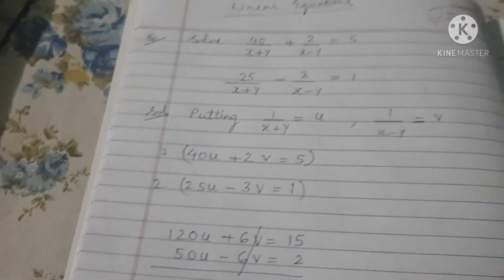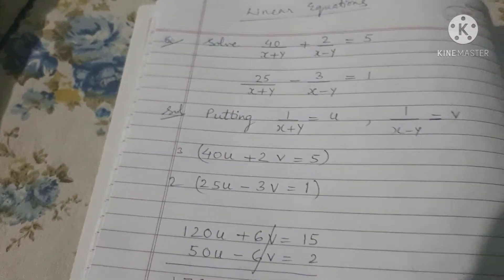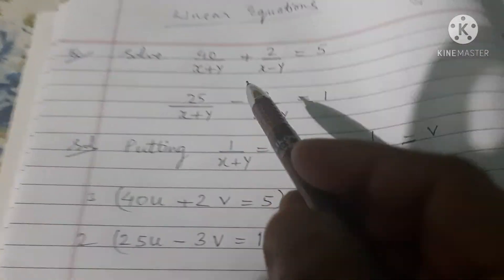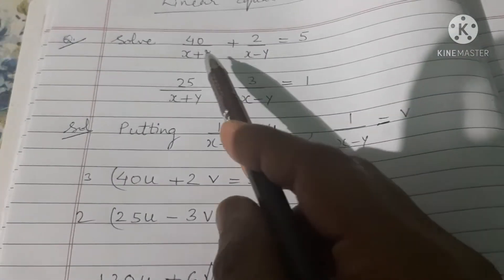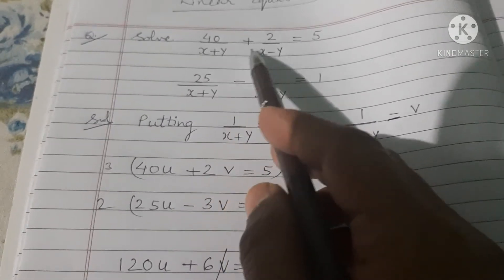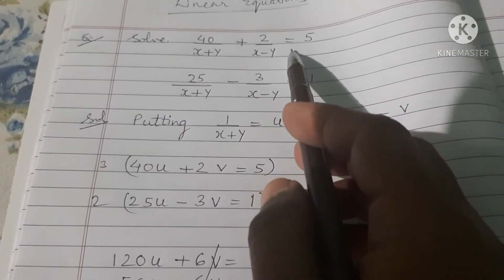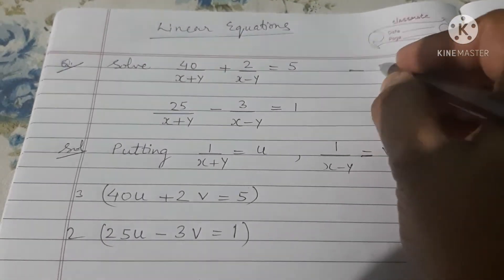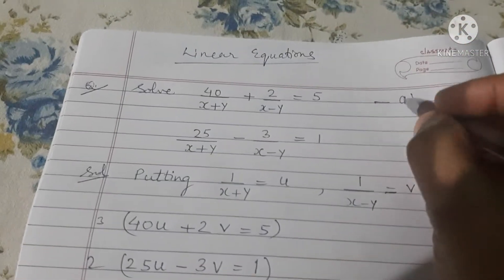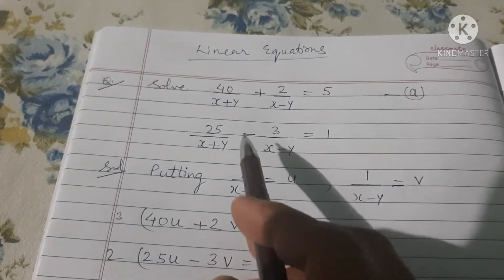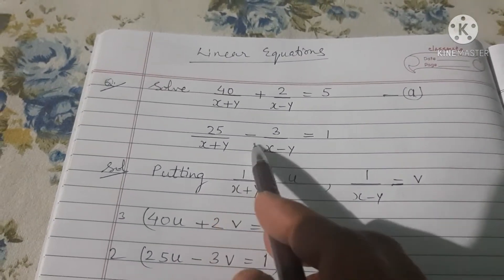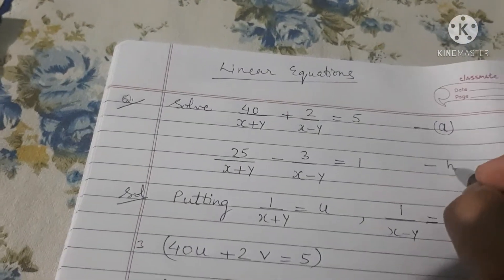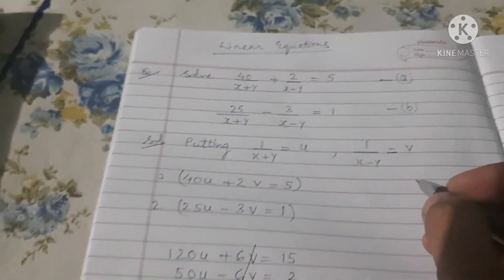Hello students, today we are going to solve linear equations. These are a set of linear equations. You can see: 40 upon (x plus y) plus 2 upon (x minus y) is equal to 5. This is one linear equation — call it A. And 25 upon (x plus y) minus 3 upon (x minus y) is equal to 1. This is the second linear equation — call it B.